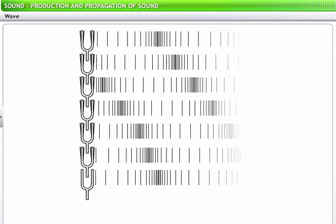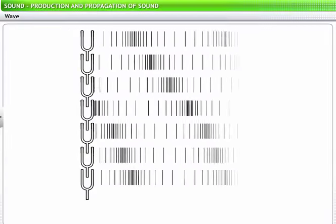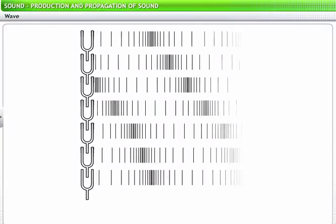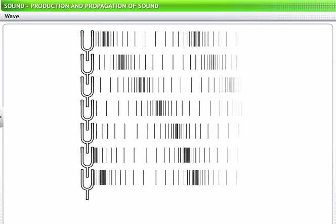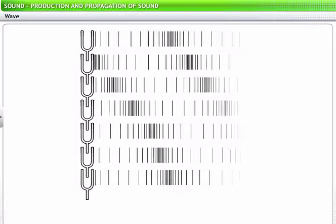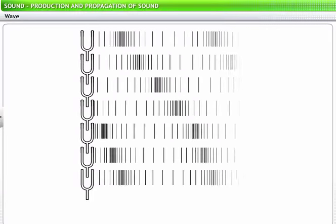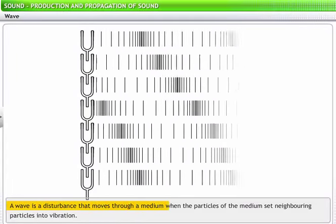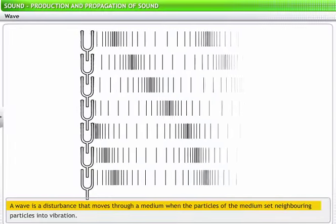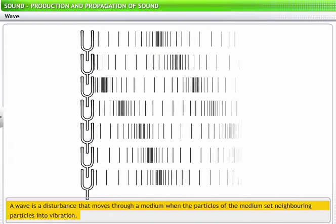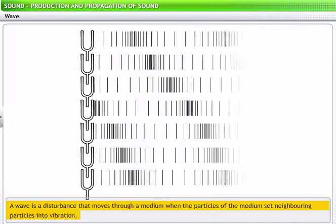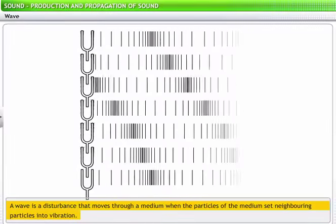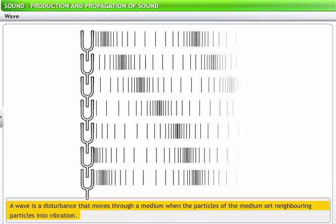This process continues until the sound reaches the listener. As you can see, particles of the medium do not move from the source to the listener. But it is the disturbance in the particles that is carried forward to the listener. This kind of a disturbance is called a wave. In other words, a wave is a disturbance that moves through a medium when the particles of the medium set neighboring particles into vibration. Therefore, we visualize sound in the form of waves. Air is the most common medium through which sound propagates.